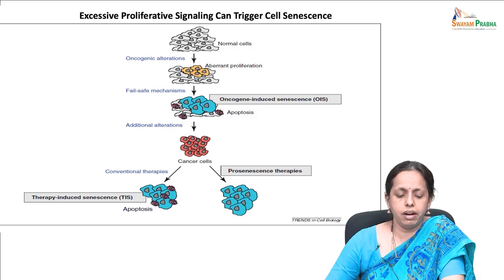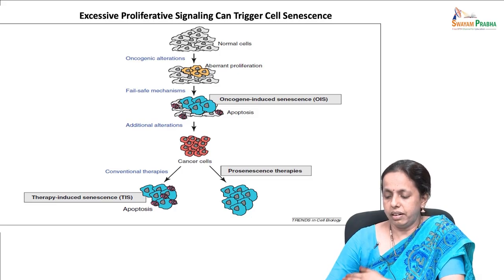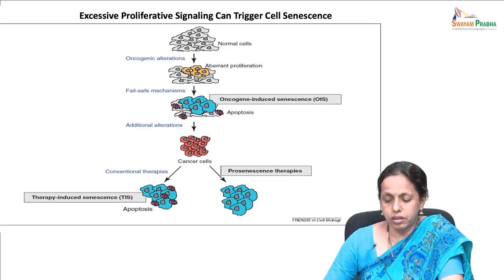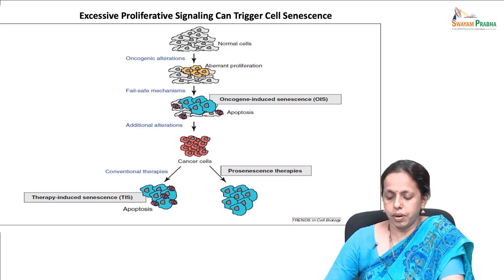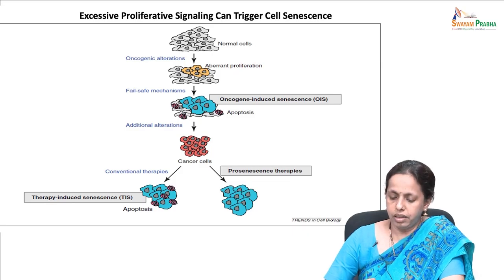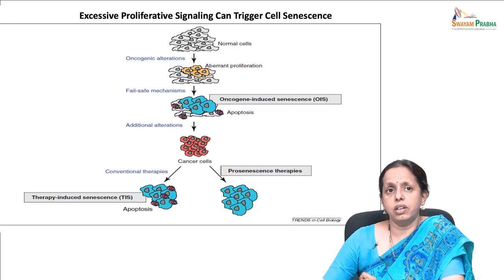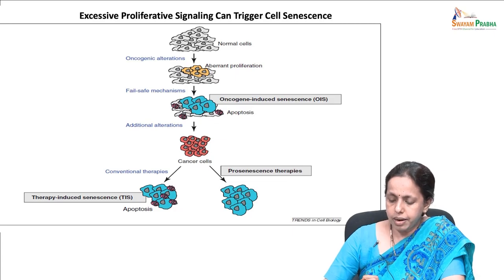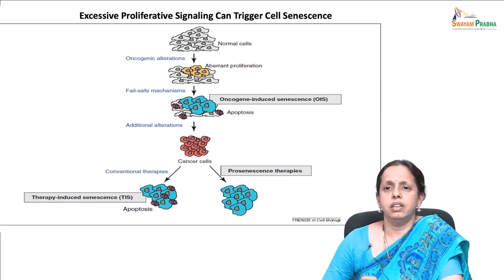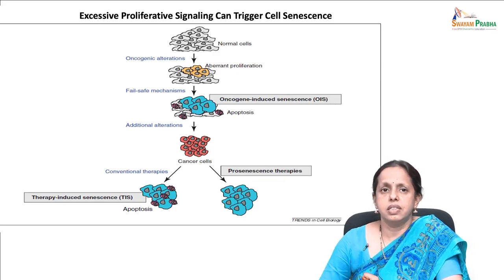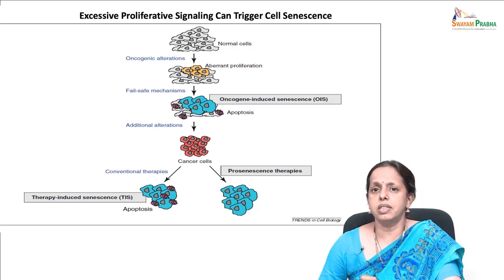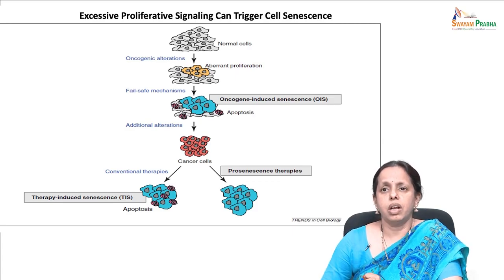When normal cells accumulate oncogenic alterations, they trigger an initial phase of aberrant cell proliferation, giving rise to preneoplastic lesions. Parallel to this aberrant proliferation, cell-intrinsic fail-safe mechanisms fail. Oncogene-induced senescence (OIS) and apoptosis are activated. Further additional alterations will occur, and the cancer cells will progress towards tumor. Conventional treatments such as chemotherapy and radiotherapy act by inducing cell death or cell senescence — termed therapy-induced senescence (TIS). Currently, pro-senescence therapies are being explored as alternatives or complements to cancer treatment.